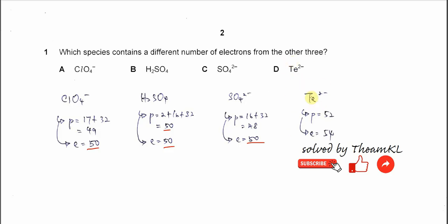For Te, if you check the periodic table, the proton number is 52. The electron number must be 52 plus 2 because it's 2 negative. So the electron number is 54, which is different from the other three. So the answer is D.